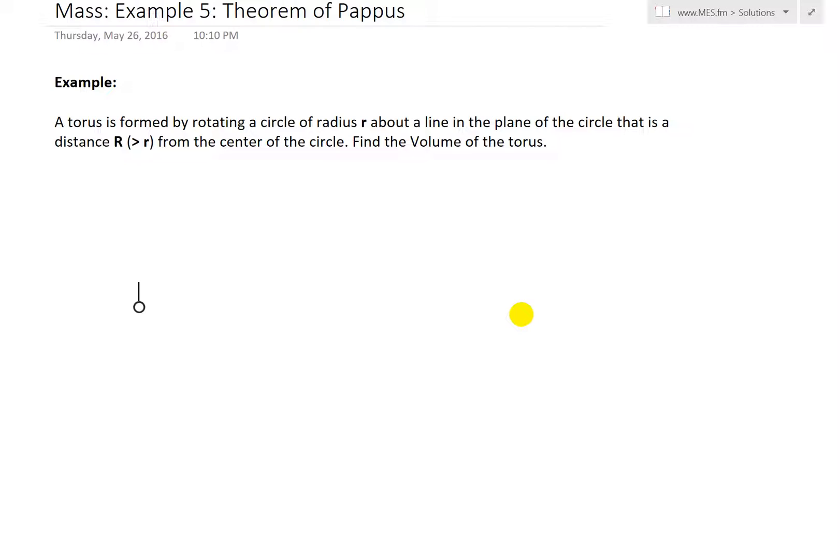And this is a pretty interesting example right here. It states a torus is formed by rotating a circle of radius r about a line in the plane of the circle. That is a distance capital R, which is greater than r from the center of the circle. And this is find the volume of the torus.